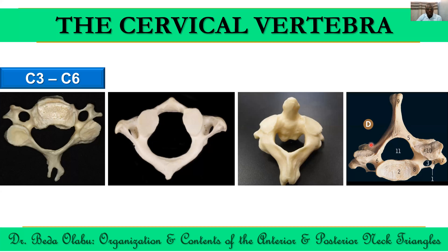In this particular situation, the C7 vertebra had one, and that's why you see it there. Also take note that the typical cervical vertebra has a triangular vertebral canal, as you can see there, and that it usually has uncinate processes on either side.